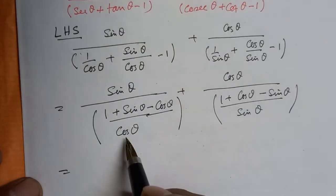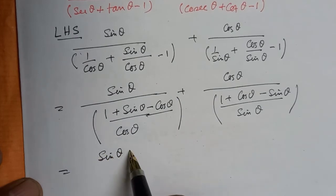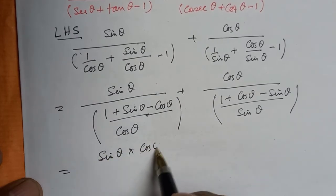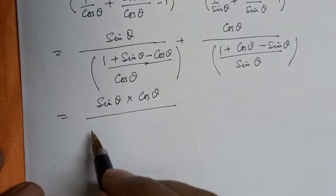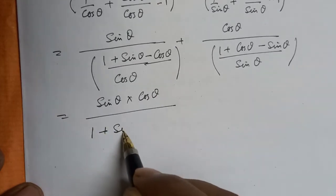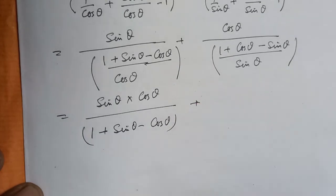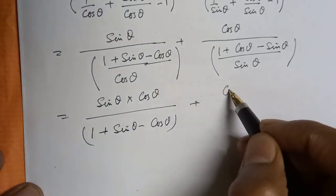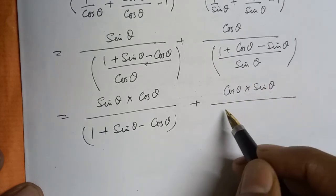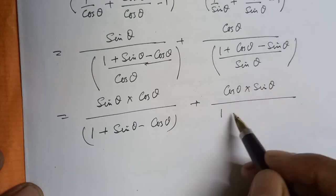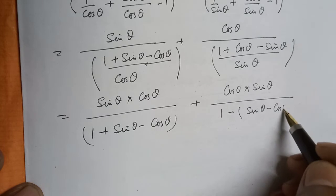So we can write: sinθ·cosθ/(1 + sinθ - cosθ) + cosθ·sinθ/(1 + cosθ - sinθ). We take sinθ·cosθ as common.